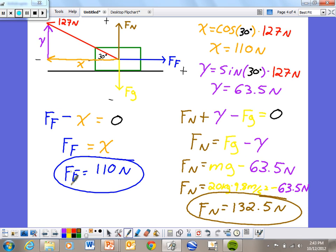So our friction is 110. Our normal force is 132.5. And don't forget, you've got to remember that y. The most common mistake in these problems is people forget that this y is pulling upward. And this problem is done.